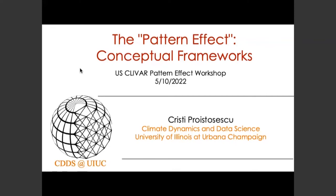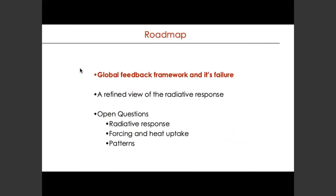The talk will cover frameworks: starting with the old global framework and why it fails, then refined versions of the radiative response — which turns out to be the key — and then some open questions about other parts of the energy budget. Starting with a review of Earth's energy budget in a more general form: at the top of the atmosphere, you have an energy input, which is the radiative forcing — the temperature-independent part — leading to a temperature anomaly T.